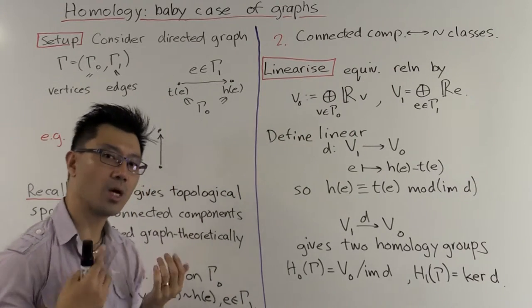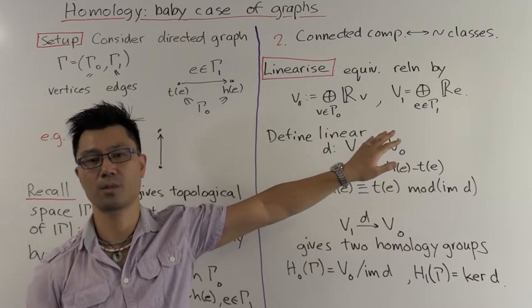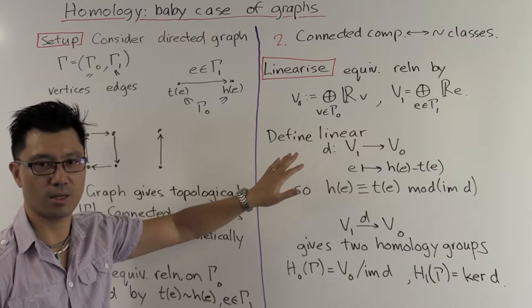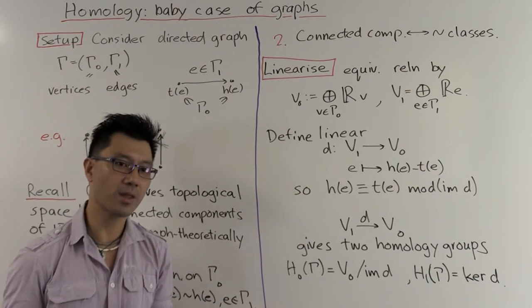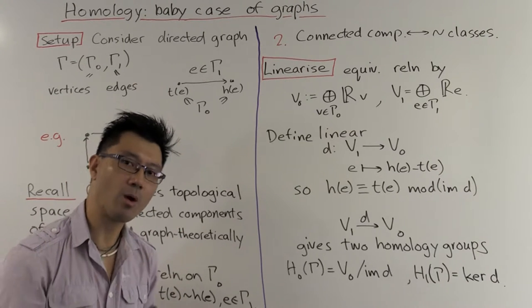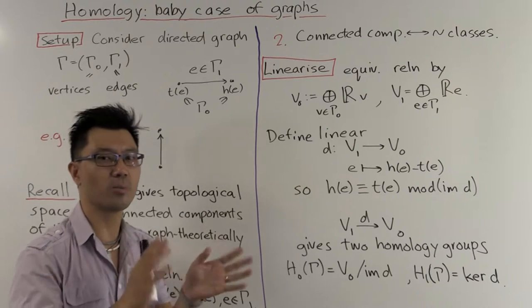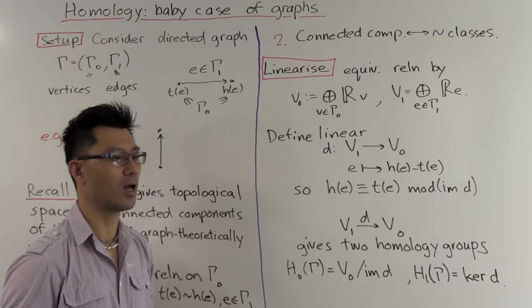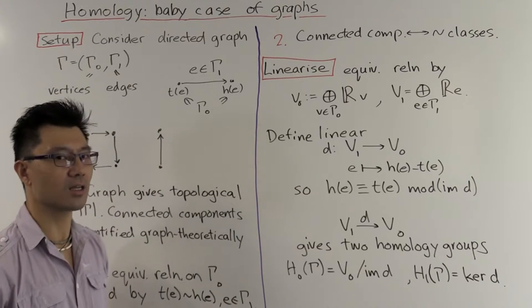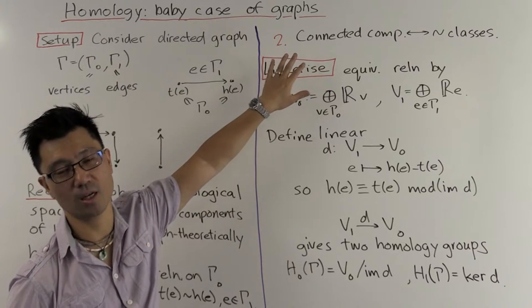Now, what we want to do in homology is we want to linearize this equivalence relation. Now, homology and cohomology, they're linear theories. And that makes them easier to compute with. And it means that you can use the techniques of linear algebra to bear upon the problems at hand. Of course, in the process, you lose a little bit of information. And sometimes it's too much. But often we find that it's still very useful.